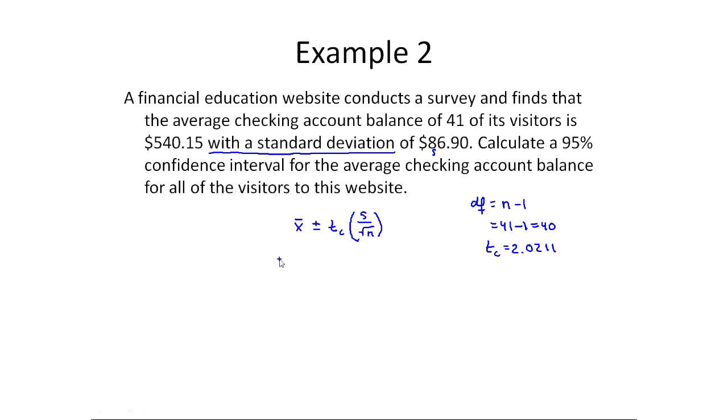So now I'm just going to plug in like I did before. For this, I have 540.15, and then plus or minus, and then tc in this case is 2.0211, and then s is 86.90, and n is 41, so this is the square root of 41.